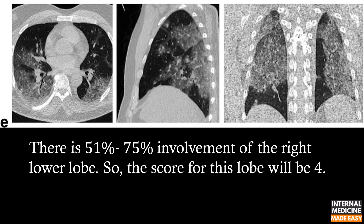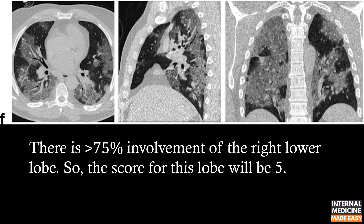Here there is 51 to 75% involvement of the right lower lobe, so the score for this lobe will be 4. And in this CT, there is more than 75% involvement of the right lower lobe, so the score for this lobe will be 5.